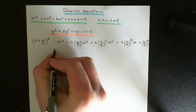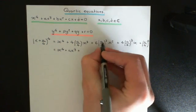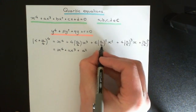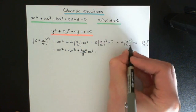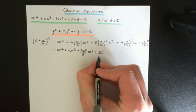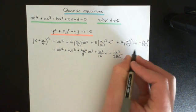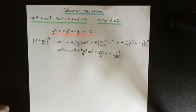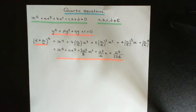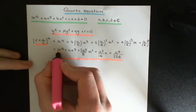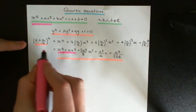Tidying this up: we get x to the power of four plus ax cubed plus (3a²/8)x squared plus (a³/16)x plus a⁴/256. The key point is that the first two terms — the degree four and degree three terms — match the original quartic perfectly. That's why we chose x plus a over four in the first place.